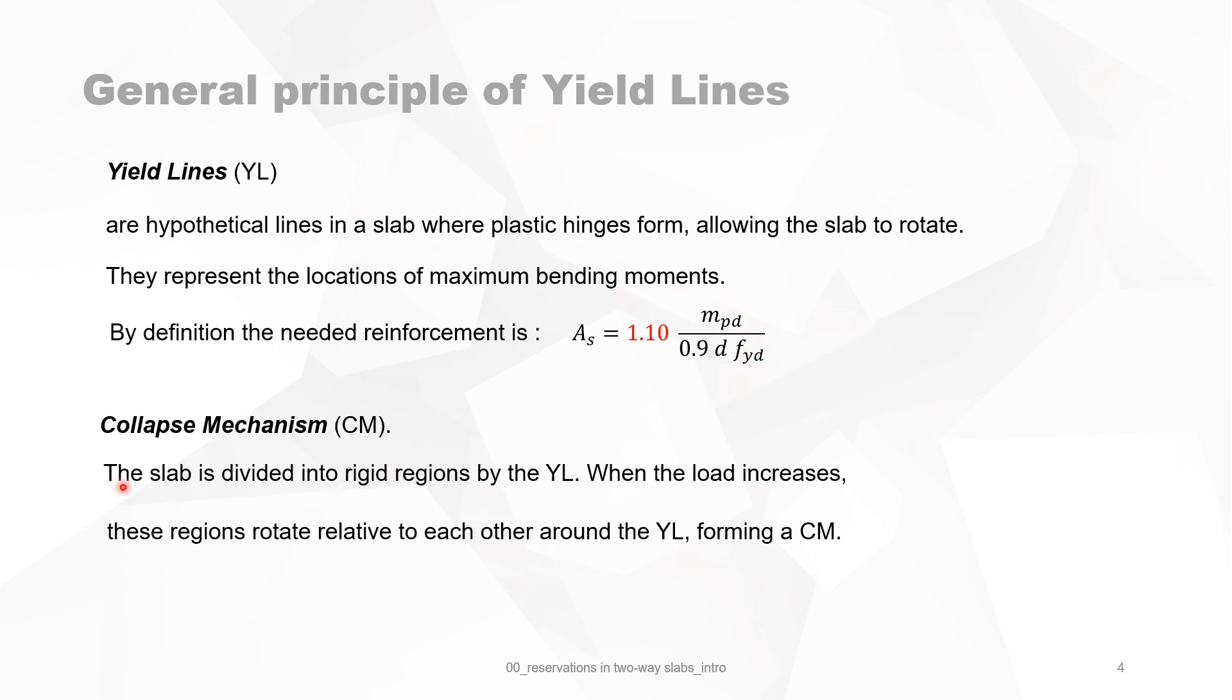Collapse mechanism: the slab is divided into rigid regions by the yield lines, and when the load increases, these regions rotate relative to each other around the yield lines. This way they are forming a collapse mechanism, which is an important element. So when you are drawing the yield lines or estimating where the yield lines should be, always think about that you need a collapse mechanism.